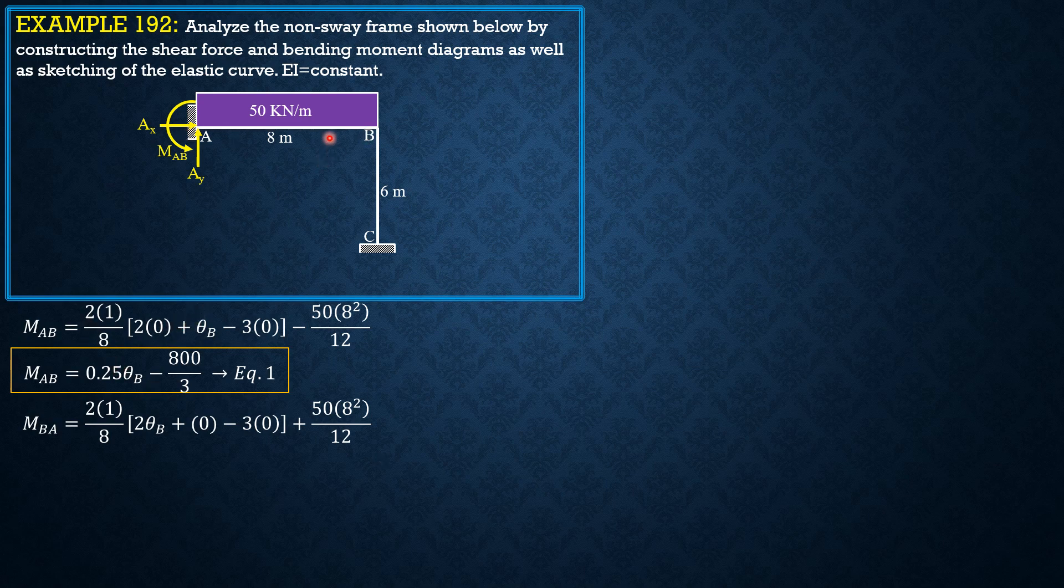MBA is 2 times 1 over 8 times quantity (2θB plus 0) minus 3 times 0 plus 50 times 8 squared over 12. This is the equation when both ends of the segment of a beam or frame have moments, and we assume I is constant, which equals 1 here.